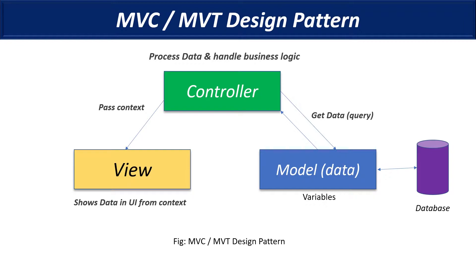All that information goes to the controller, because the controller controls everything. It takes all the information from the model, processes it, and passes the context to the view. The view is the user interface of our web or mobile application — it's the user component that the user interacts with. You can touch it, click any button, and most people know this view component well because it shows all the information coming from the controller.